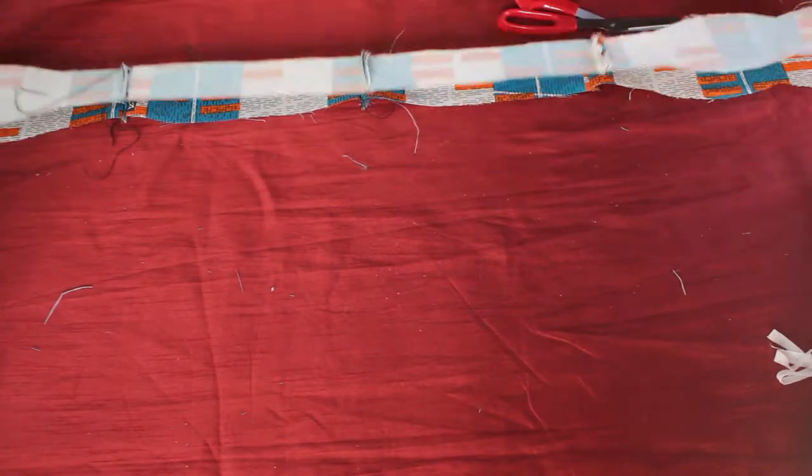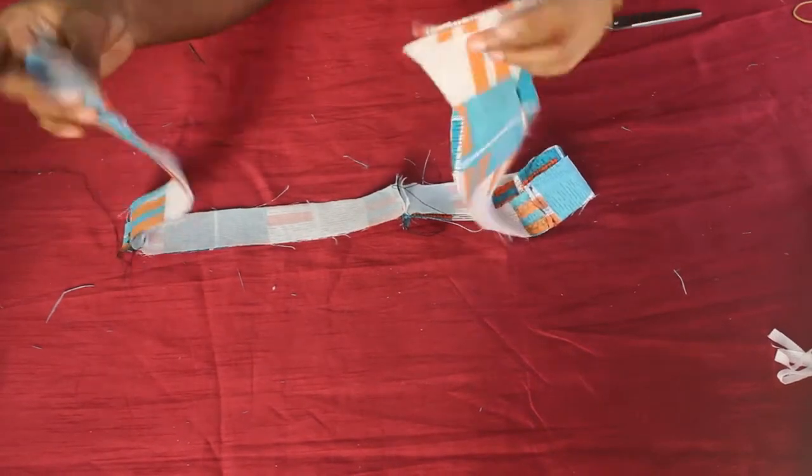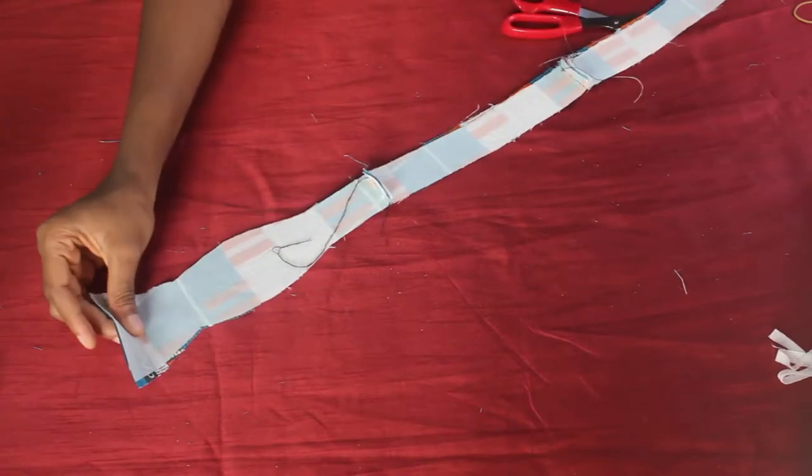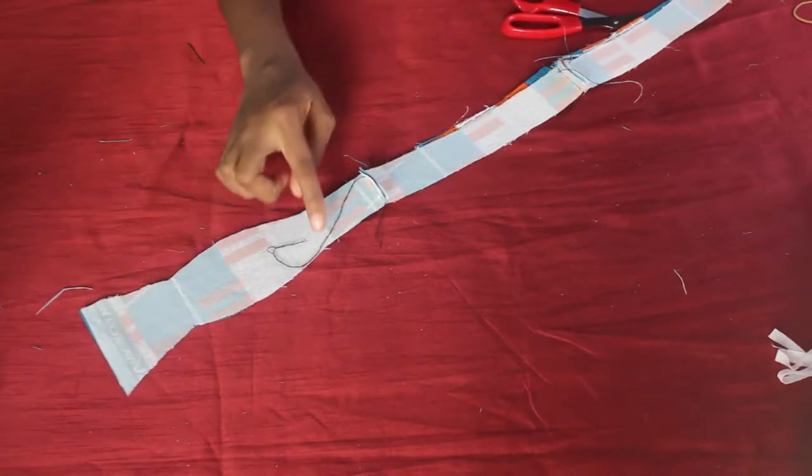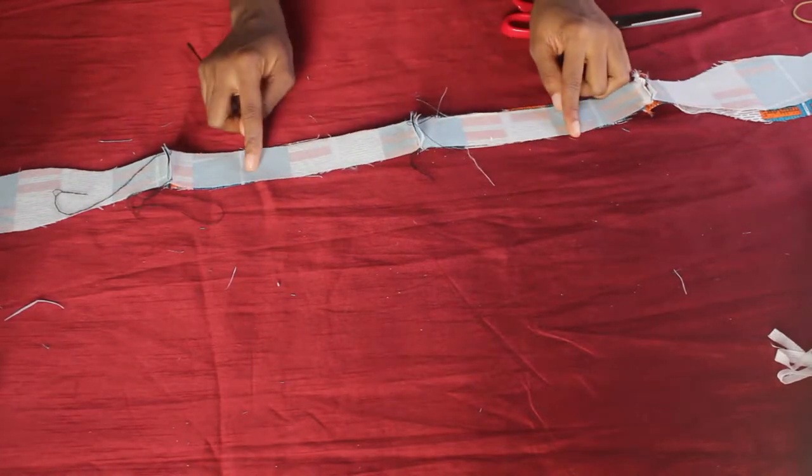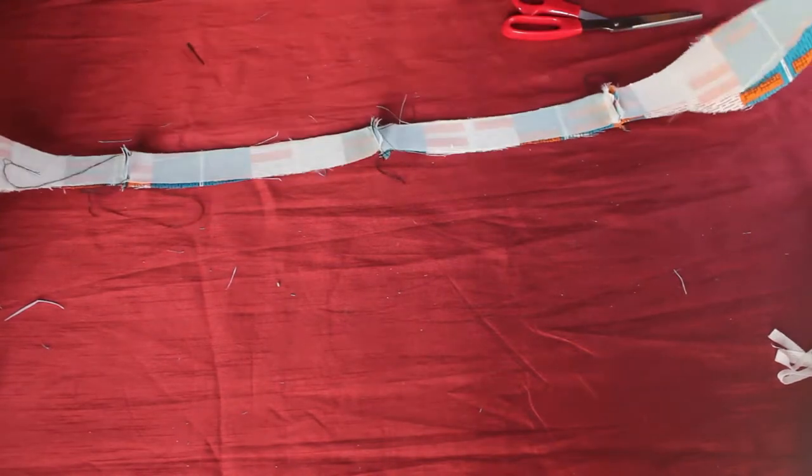I then take the two long pieces of fabric and I place them on top of each other with the right sides facing each other. I'm going to sew all the way around the two pieces, joining them together, but I'm going to leave a little bit of a gap for when we need to turn the fabric inside out.